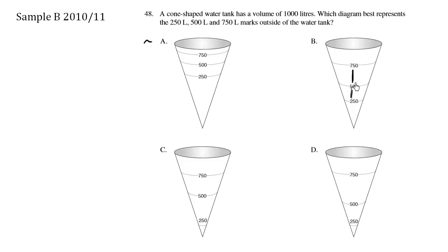because we're getting wider over here, so choice B is incorrect. Choice C: if this here is 250 mils, there's